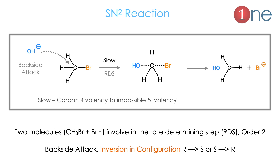In SN2 reaction, the nucleophile attacks from the back side of the substrate, forms a slow transition state, then it converts into alcohol. The step is slow because carbon is attaining five valency. The important thing is the attack is from the back side and the product is always inverted in configuration, which is R to S or S to R.